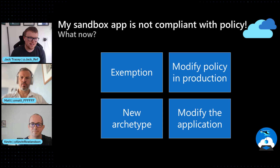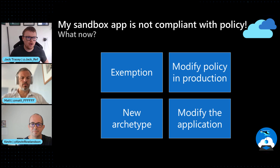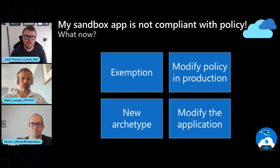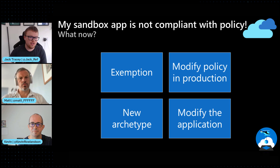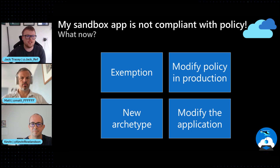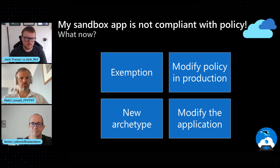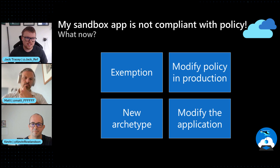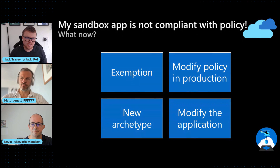Finally, and the least preferable for most application teams, is modifying the application itself. There may be a governance or regulatory compliance framework that means what you've designed just cannot work for the business. The platform team should work with you to understand what needs to be tweaked to make it compliant — it might be as simple as using private endpoints for all of your PaaS services. These are the four options customers commonly go through, and you should definitely start with exemptions before moving towards modifying the application as the least preferable option.